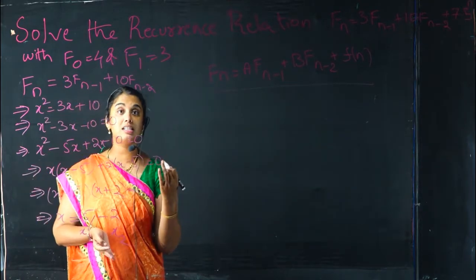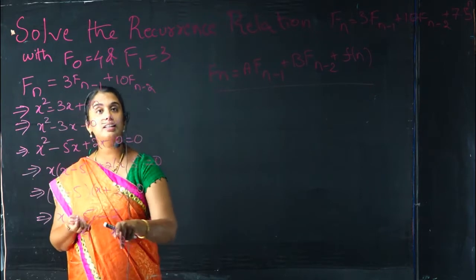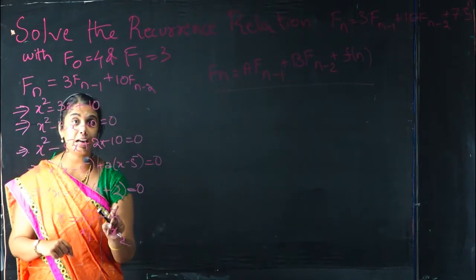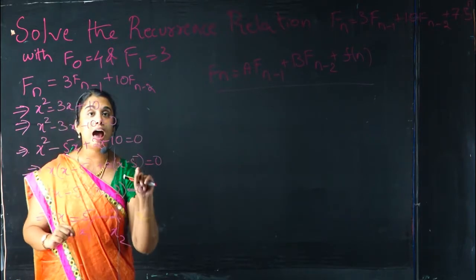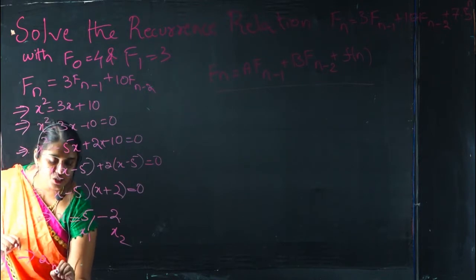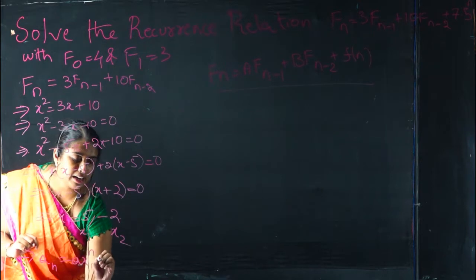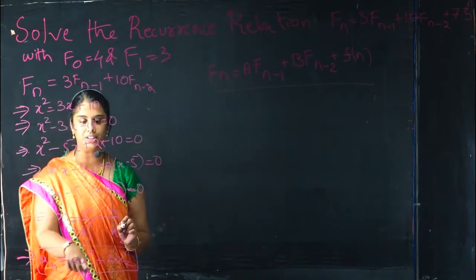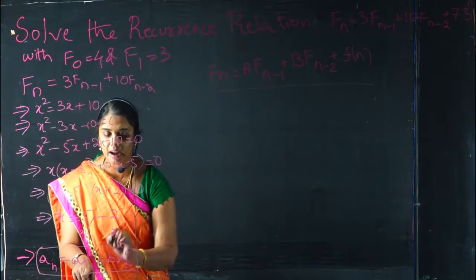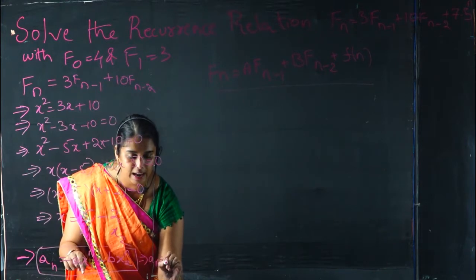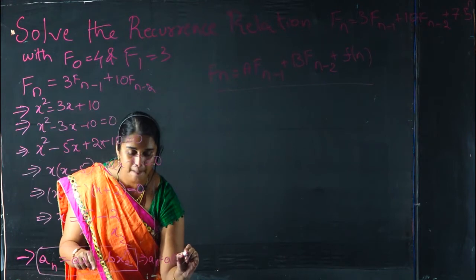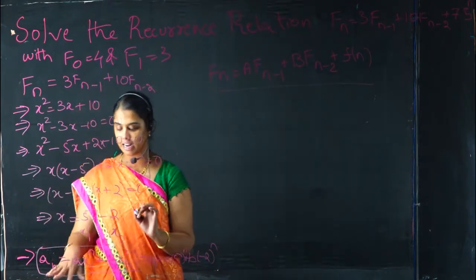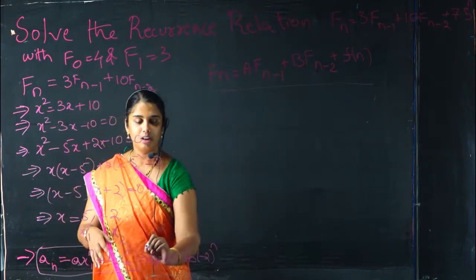Now we have two different roots, 5 and -2. Having two different roots, the homogeneous solution is AH = A·X1^n + B·X2^n. Substituting X1 = 5 and X2 = -2, we get AH = A·5^n + B·(-2)^n. This is the solution of the homogeneous recurrence relation.